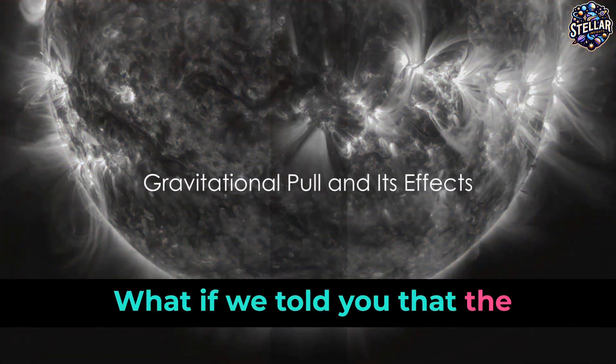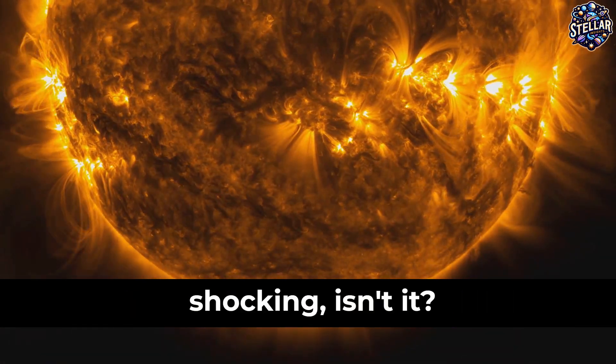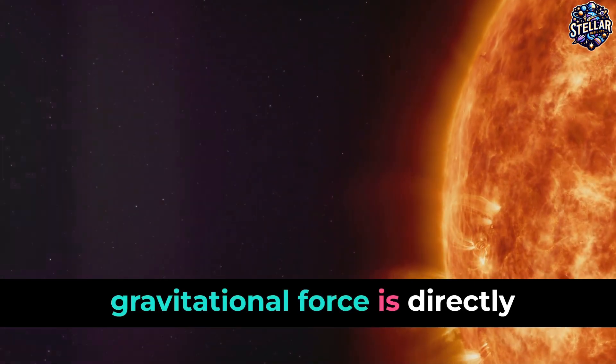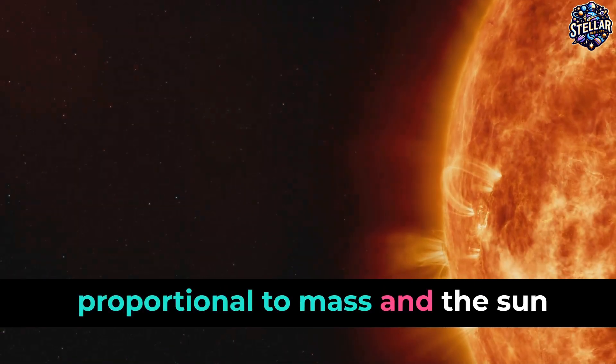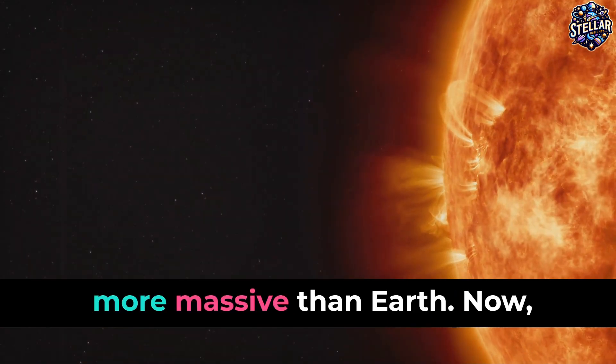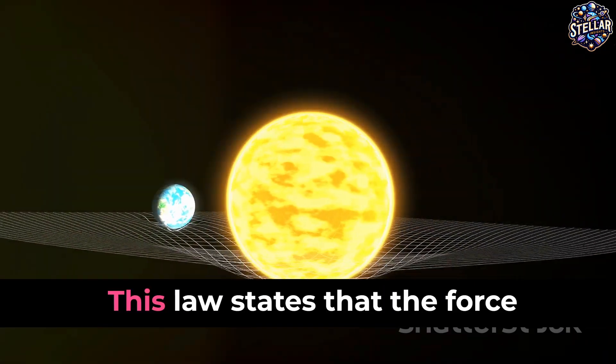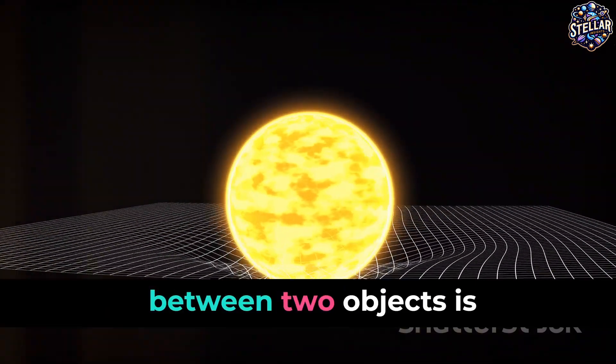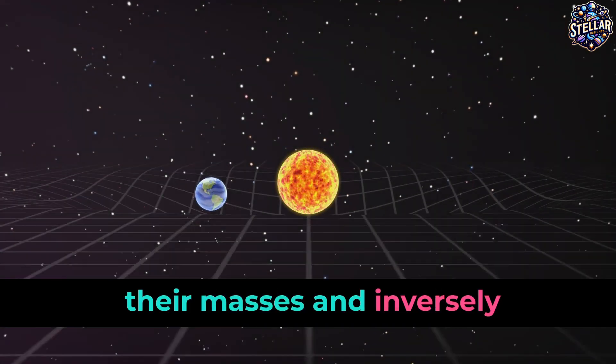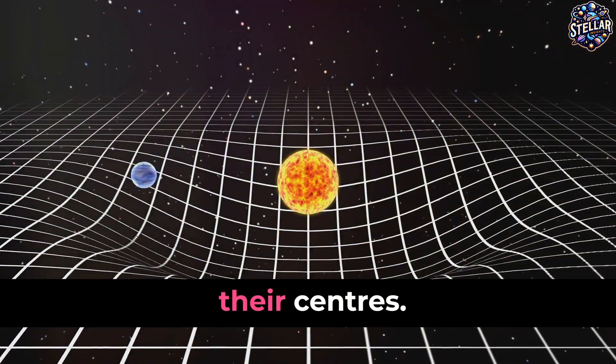What if we told you that the sun's gravitational force is 28 times stronger than Earth's? This is because the gravitational force is directly proportional to mass, and the sun is approximately 333,000 times more massive than Earth. Now, let's talk about Newton's law of universal gravitation. This law states that the force between two objects is proportional to the product of their masses and inversely proportional to the square of the distance between their centers.